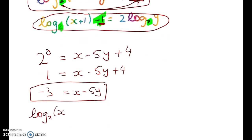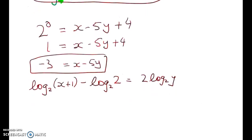So log to base 2 of (x plus 1) minus—well, 1 is just the log to base 2 of 2—and that's equal to 2 log to base 2 of y. Now we can use our log rules to put some things back together. So we've got log to base 2 of (x plus 1 over 2) is equal to log to base 2 of y squared.